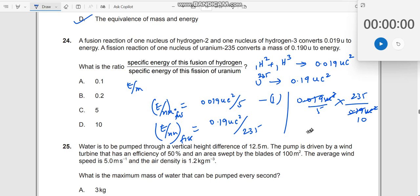0.019 and 0.19, right? So therefore, I get this as 235 divided by 10 which should now be equal to 2.35, sorry 23.5.